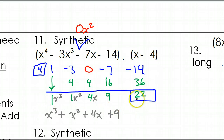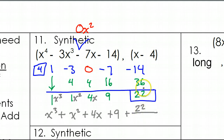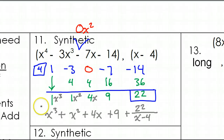For the remainder, you take your remainder and put it in the numerator, and you put it over the thing by which you are dividing. So this should be the final answer for number 11.